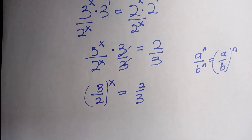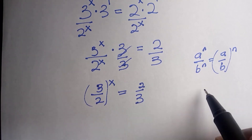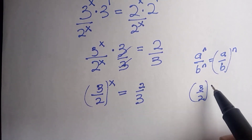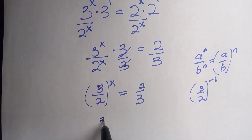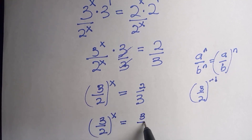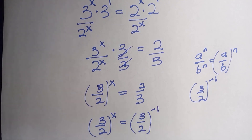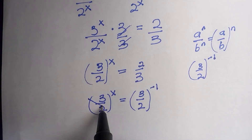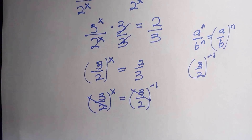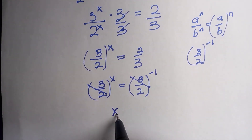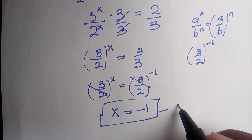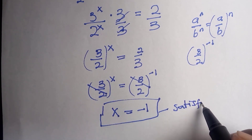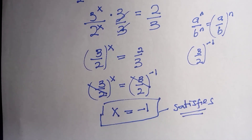I've divided by 3 on both sides, giving us that form. Now, 3 divided by 2 raised to the power of minus 1 is the same as 2 divided by 3 — it's the inverse. So we have 3 divided by 2 raised to the power of x equals 3 divided by 2 raised to the power of minus 1. Since we have the same base, x equals minus 1, which is the required value that satisfies the equation.